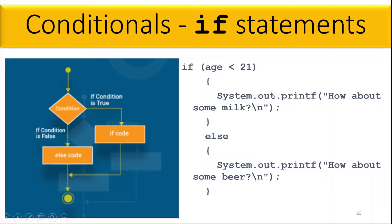For example, if age is less than 21, one statement will be displayed; if the condition is false, the other will execute. Not both statements will display — it will only choose which one to perform depending on the result of the condition. Let us write it in the Eclipse environment.